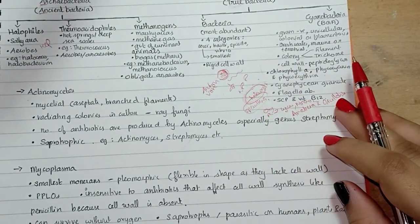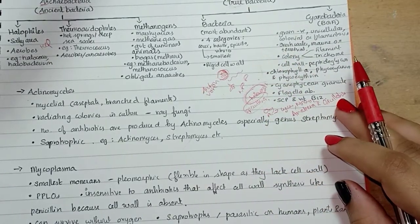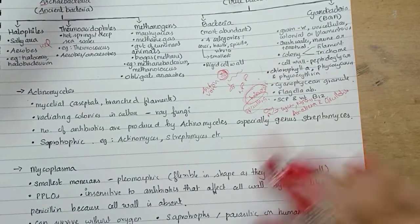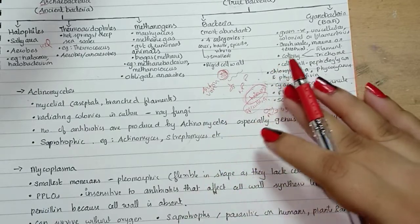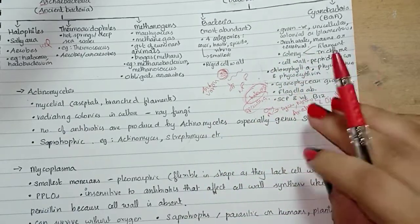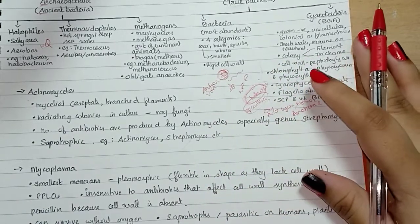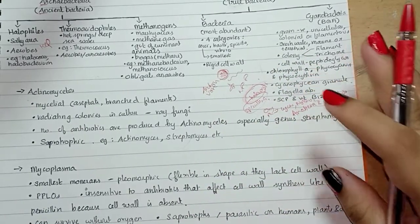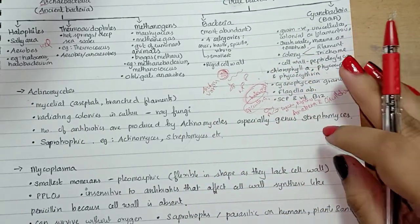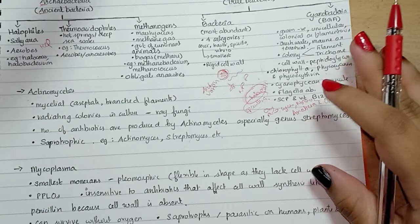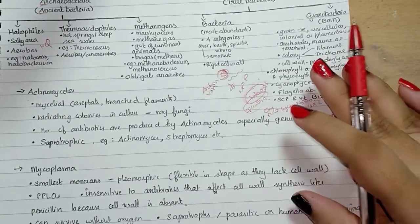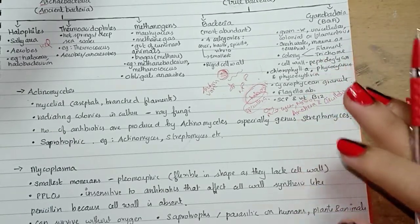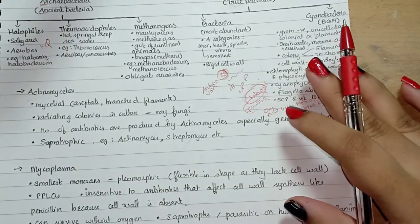During rain, the land becomes slippery, and that is due to blue-green algae. Blue-green algae is the reason why land is slippery during the rainy season.